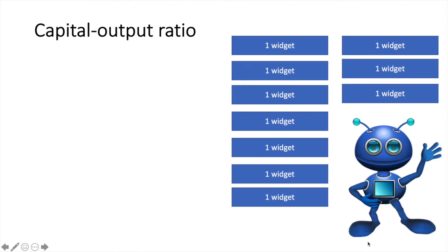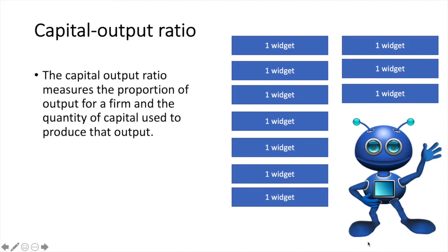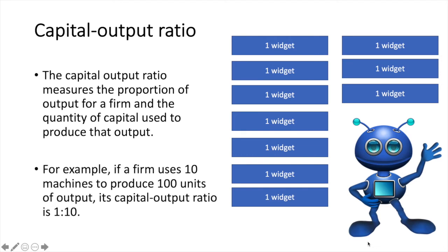The capital output ratio measures the proportion of output for a firm relative to the quantity of capital used to produce that output. For example, if a firm uses 10 machines to produce 100 units of output, its capital output ratio is 1:10.